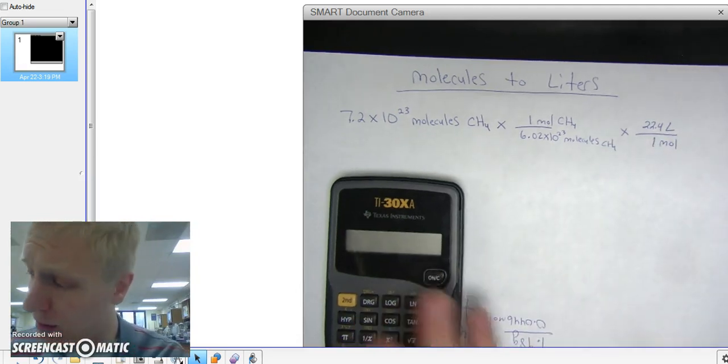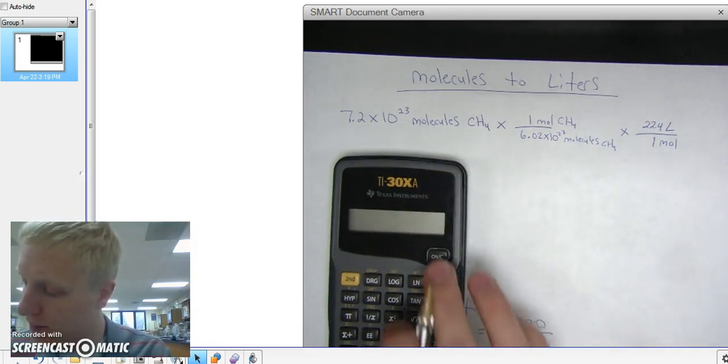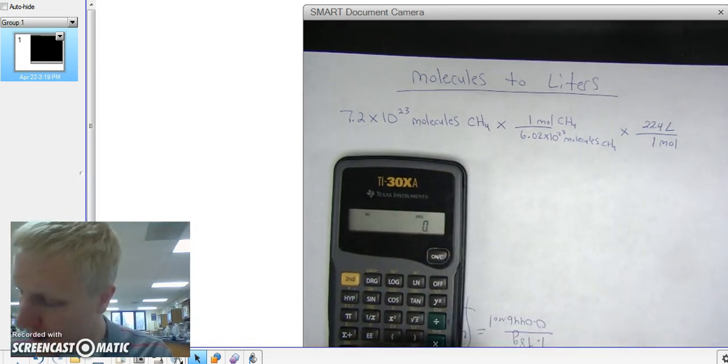Otherwise, you'd have to use the ideal gas law. Alright, so let's do this. We got 7.2 E, 23. E stands for times 10.